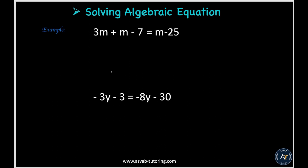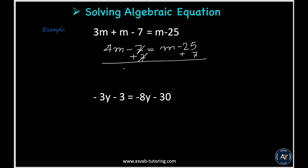Let's solve another two algebraic equations. If you have multiple like terms, simplify first. For example: 3m plus m minus 7 equal to m minus 25. Simplify the left side: 3m plus m equals 4m, so you have 4m minus 7 equal to m minus 25. Add both sides by 7 — the 7s cancel — giving 4m equal to m minus 18.